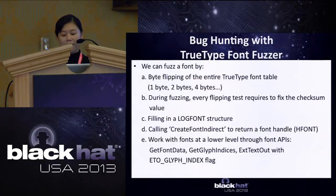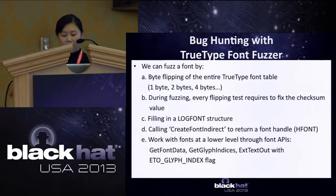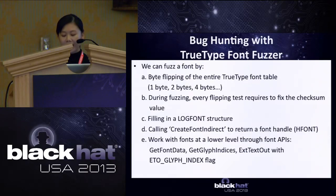Fonts can be fuzzed via different methods: 1-byte, 2-byte, or 4-byte flipping. However, no matter how the font is fuzzed, the checksum value must be recalculated for each byte-flipping test case. Some important functions are needed to ensure fuzzing works. The logfont structure plays an important role in defining font attributes. Calling the CreateFontIndirect function should return a font handle, but it is unable to work with lower-level font APIs. Therefore, API functions such as GetFontData, GetGlyphIndex, or ExtTextOut with ETO_GLYPH_INDEX flag can be used to fix this problem.